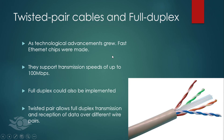As technological advancements were fast rising and network requirements grew, the chips on network interface cards were improved to support Fast Ethernet. Transmission speeds of up to 100 megabits per second and a full duplex mode of communication were supported. To implement full duplex communication over the physical wiring, the coaxial cable had to be replaced by twisted pair cables, which allowed for reception and transmission of data over different wire pairs.